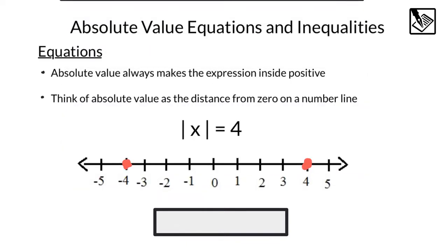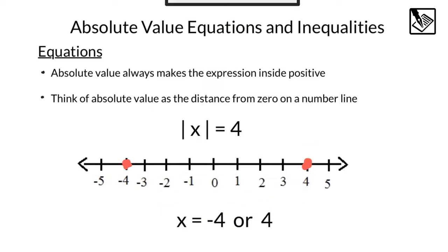That means it could be negative 4 — 4 spaces left — or positive 4 — 4 spaces right. That means if we solve this, we would have x is equal to either negative 4 or positive 4.